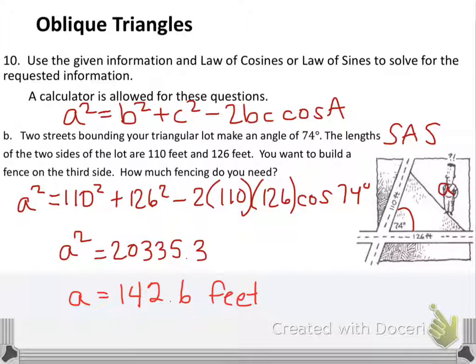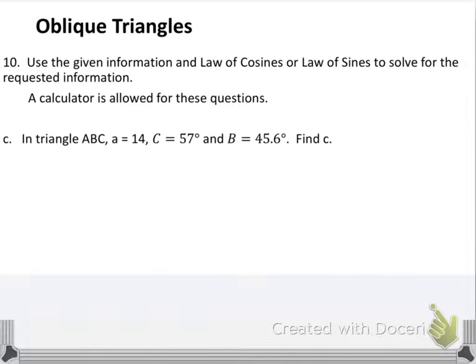So that is the second way that we would use law of cosines. Let's look at the third example that's in our review, question C. We're told triangle ABC, we're given side A is 14, angle C is 57 degrees, and angle B is 45.6 degrees. And what we want to do is we want to find the length of side C.